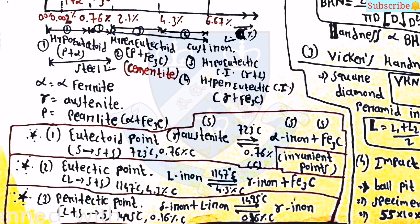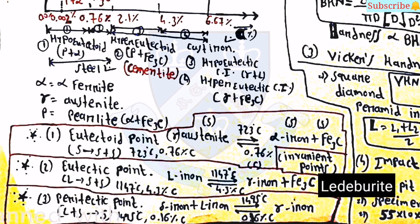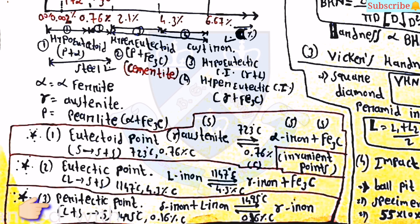The second important point is the eutectic point: temperature is 1147 degrees Celsius and carbon percentage is 4.3%. At this point, liquid iron converts into gamma iron plus Fe3C. The third is the peritectic point: temperature is 1495 degrees Celsius and carbon percentage is 0.16%. At this point, delta iron plus liquid iron converts into gamma iron.